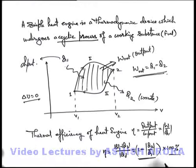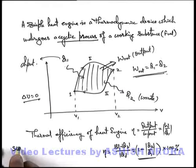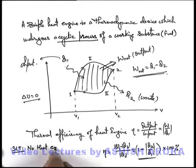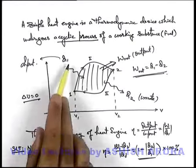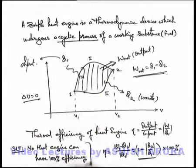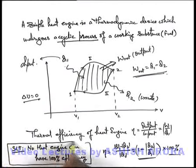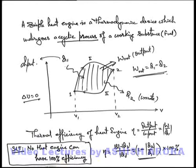Always remember another form of the second law of thermodynamics: the second law can also be stated as no heat engine can have hundred percent efficiency, because hundred percent of heat can never be converted into work. This is another form of the second law which we can use.